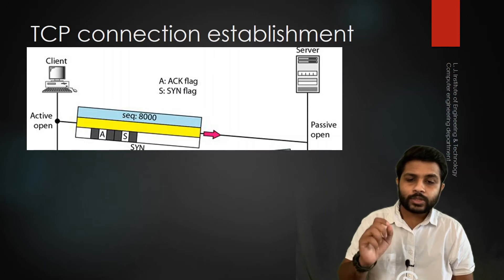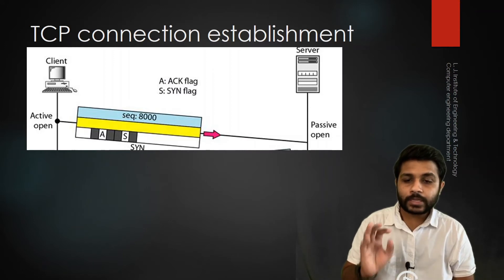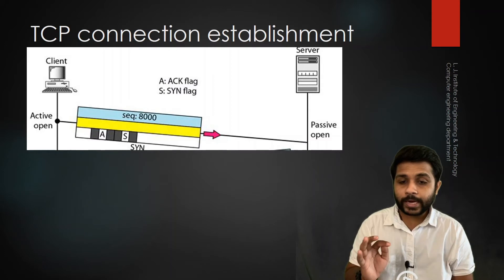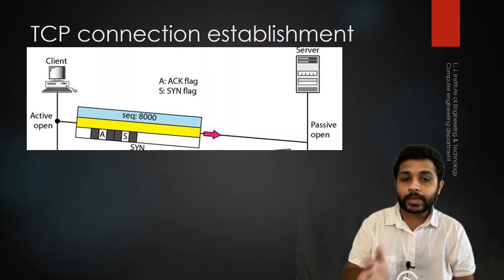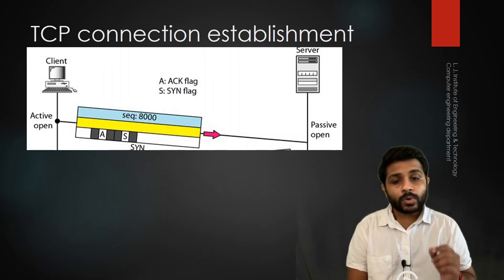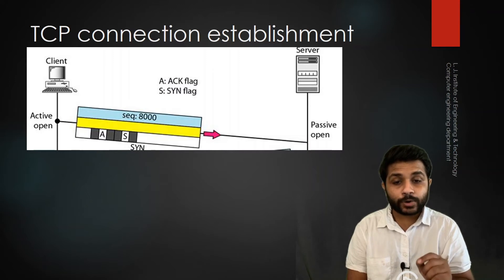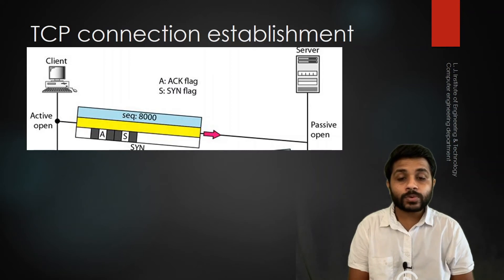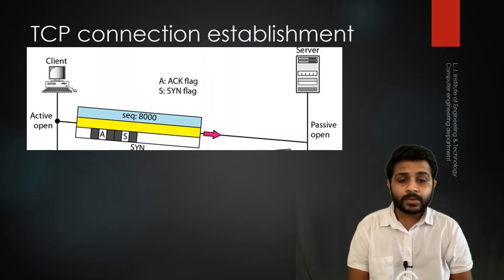In this figure you can see three fields: 8000 which is the sequence number, the acknowledgement flag, and the SYN flag. The packet is created by the client and sent to the server. The value of the acknowledgement flag is 0 and the value of the SYN flag is 1, which is why this packet is known as a SYN packet — SYN means synchronization.